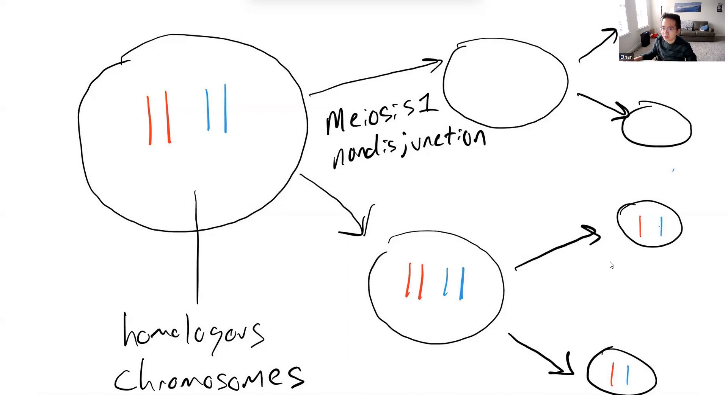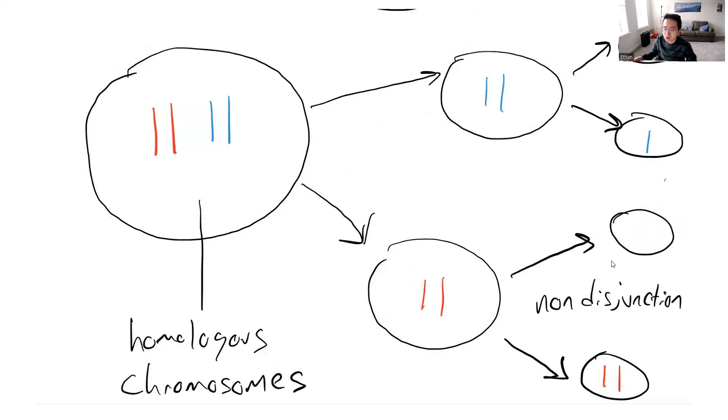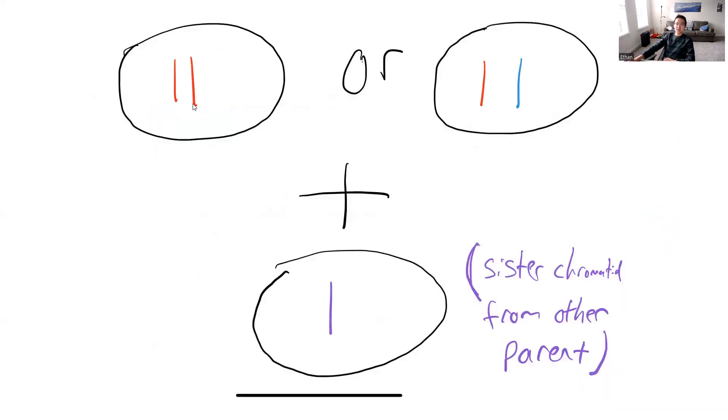But it's not only possible to fail at meiosis I. You can also fail at meiosis II. The homologous chromosomes separate correctly, you could also fail to separate sister chromatids. That creates a gamete with two identical sister chromatids. So the eventual gametes that are created from these events are shown here. You get the two sister chromatids or the homologous chromosomes.